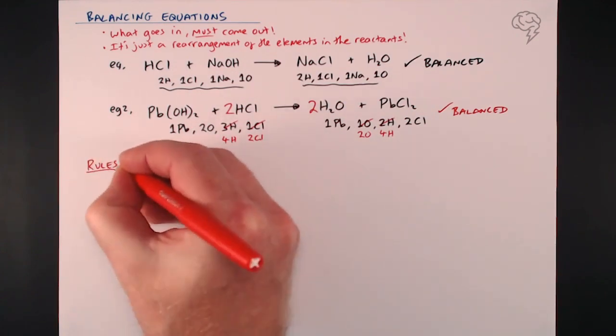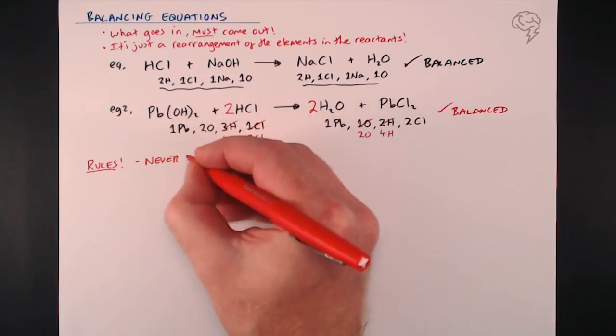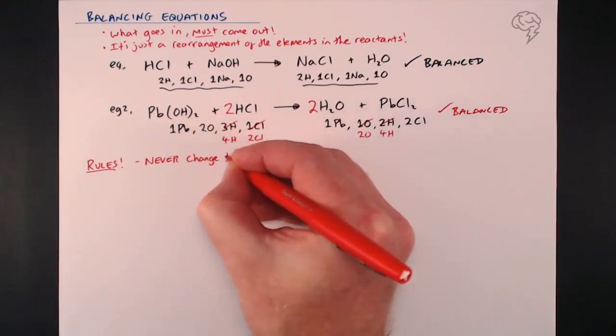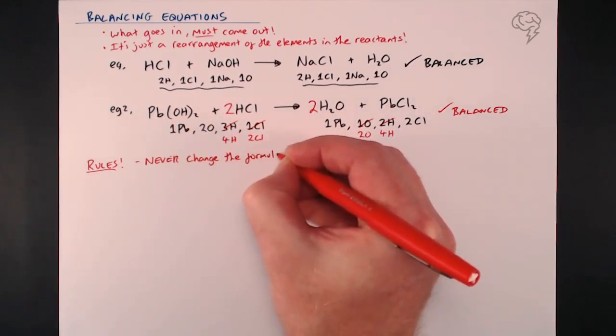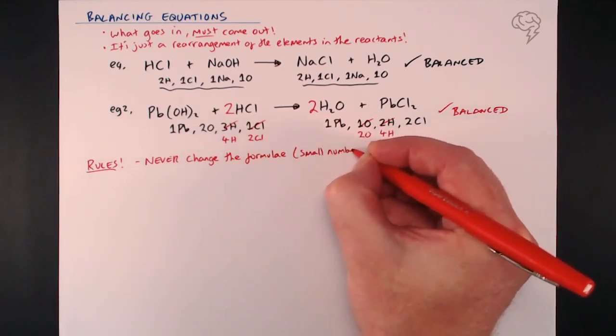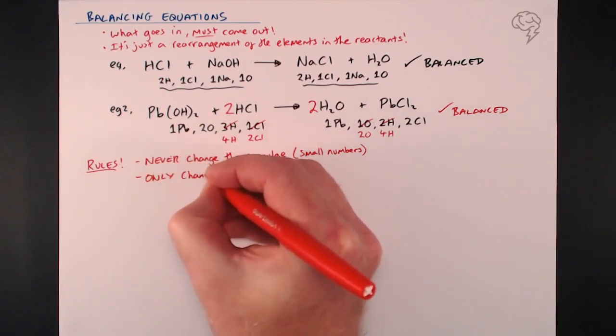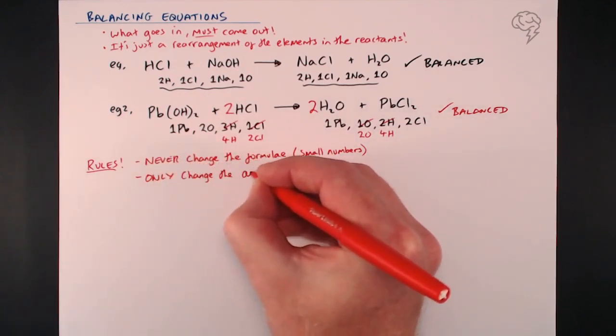The rules are as follows: we can't change the formulae - never change the formulae. They are fixed if they're correct. They are absolutely fixed. We can't change any small numbers in the formulae. We only ever change the amount of each substance, and by that I mean the big numbers in front, like I just put 2 H2O and 2 HCl.